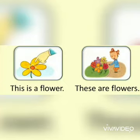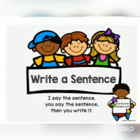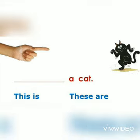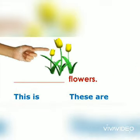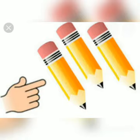Now look at the picture and read with me. Now let me test you guys. You are going to see some pictures and tell me whether to use 'this is' or 'these are.' So what will you use? This is a duck or these are ducks? Good. A cat, flowers, a bird — and this? These are pencils.